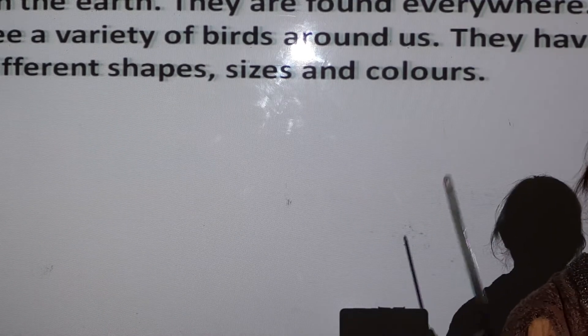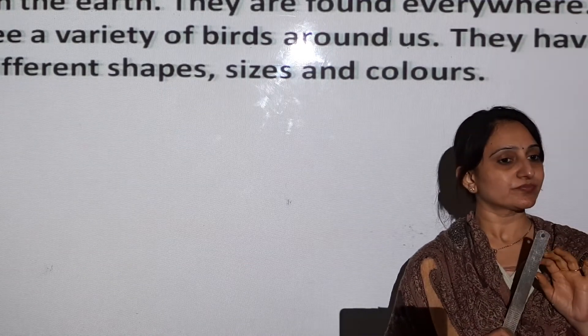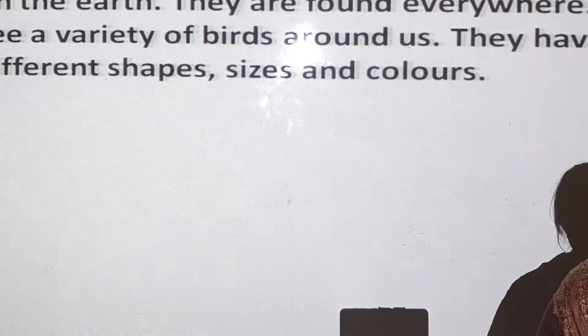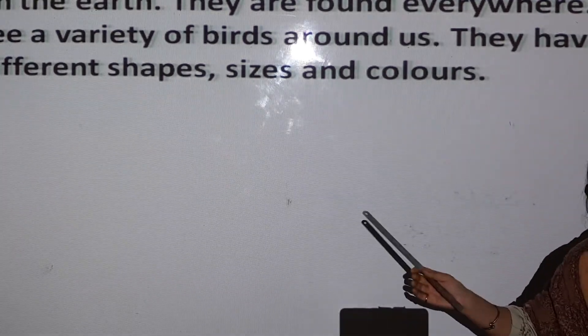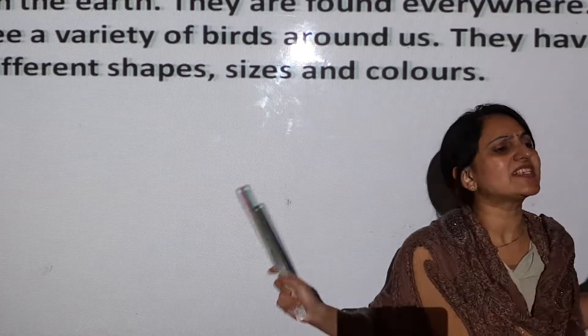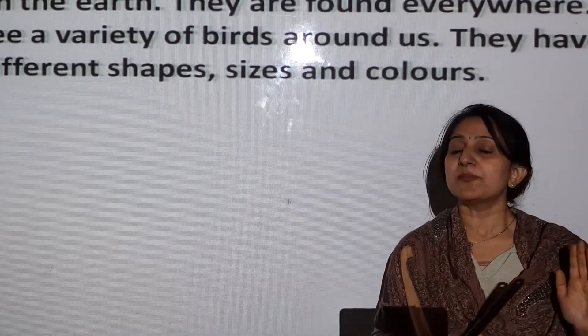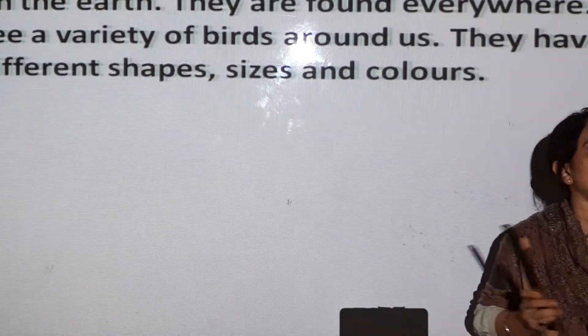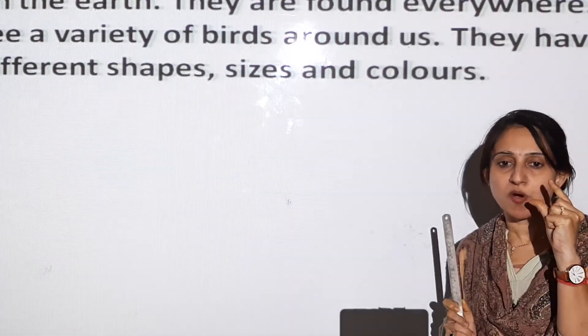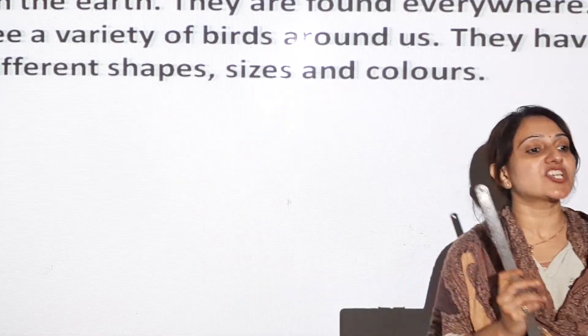Different types of birds we can see around us. Some of you answered - someone mentioned parrot, someone has seen peacock, pigeon, crow. Then cuckoo - yes! And sparrow, chidiya - have you seen them? Yes! There are a variety of birds around us and they are very beautiful. Are they all the same colour? No! They have different shapes. For example, sparrows are very small. They have different shapes, sizes and colours - some are black, some are green, likewise.